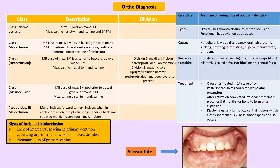Cross bite can be skeletal — due to a small maxilla or large mandible — or functional, as seen in thumb sucking cases. Functional cross bite does not have smooth closure to occlusion and will develop interferences. Heredity is the number one cause of cross bite; secondary causes include habits, supernumerary teeth, and trauma. A scissor bite occurs when the maxilla is very wide and the mandible very narrow, so the maxilla completely encloses the mandible.